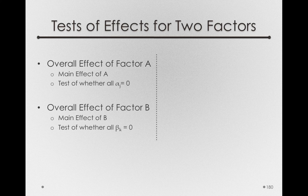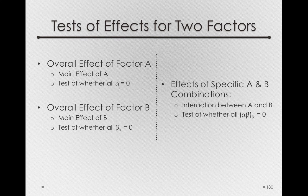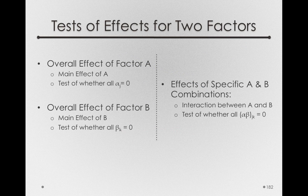Finally, we'll want to test the interaction — the effect of the specific A and B combinations. Do we think there is some interaction between A and B? Do we really need to talk about the effect of A being contingent on the level of factor B? These will be tests of whether the alpha-beta_jk's are all equal to zero in the population. In our sample, we developed the alpha-beta_jk estimates — the AB estimates — as a function of the degree to which our sample means differed from a perfectly additive world, a world where there wasn't an interaction. So to the degree that our AB's are different from zero is evidence that in the population the alpha-beta_jk's are different from zero.